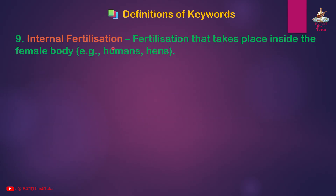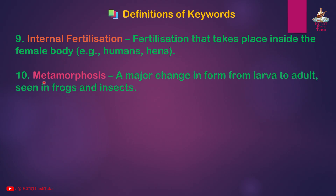Internal fertilization: fertilization that takes place inside the female body — examples: humans, hens. Metamorphosis: a major change in form, from larva to adult, seen in frogs and insects.